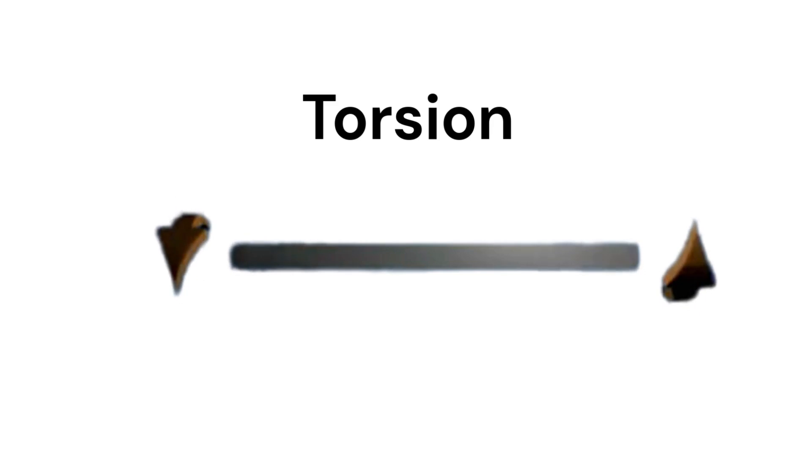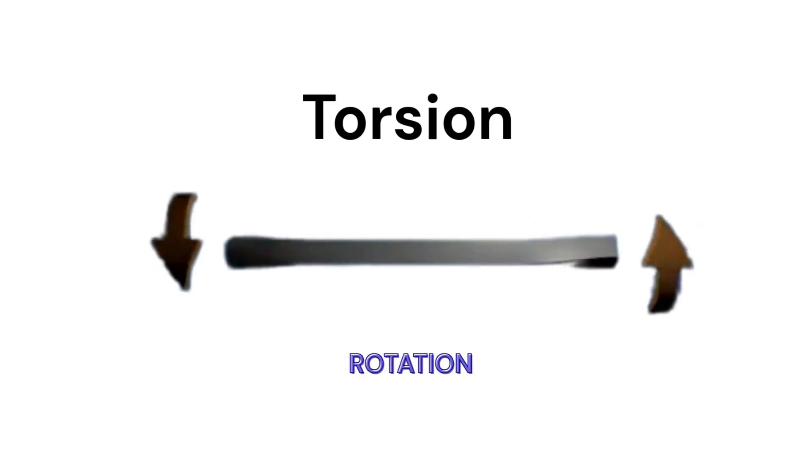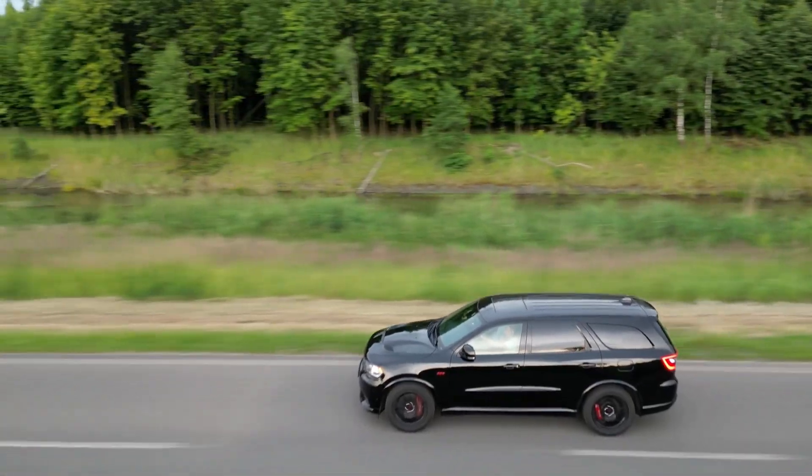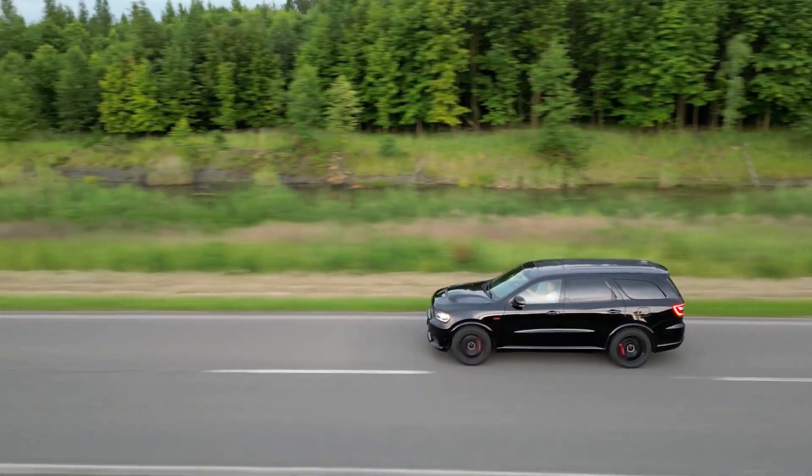And finally, torsion. Torsion happens when a member twists around its axis. The applied load causes rotation. Examples include opening a bottle, the drive shaft of a car transmitting torque to the wheels, or twisting a towel to squeeze out water.